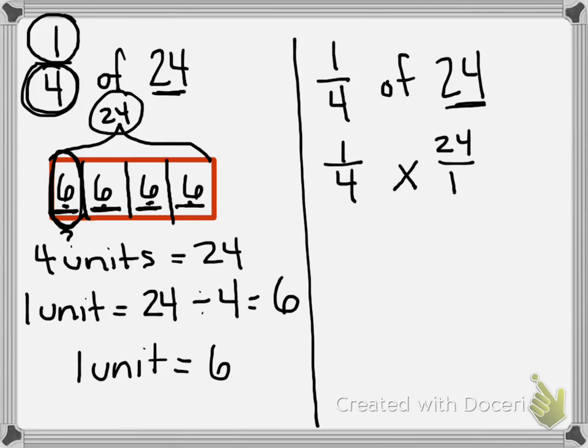Now we're going to cross simplify to make our fractions a little smaller to work with. I know that looking at 4 and 24, that 4 goes into both of these numbers. So 4 divided by 4 equals 1, and 24 divided by 4 equals 6.